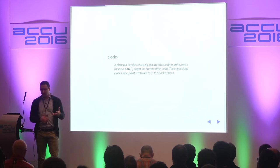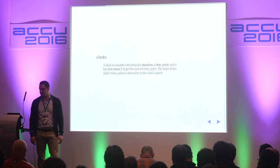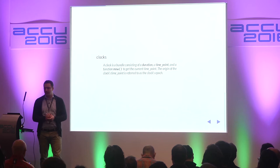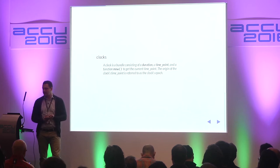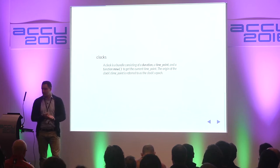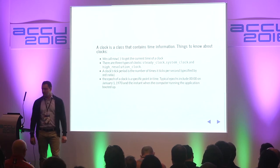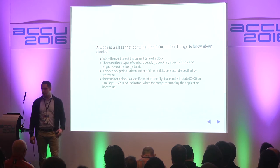To give a definition of each one: a clock is a bundle consisting of a duration, a time point, and a function 'now' that gets us the current time point. The origin of the clock's time point is referred to as the clock's epoch. It's a class that contains time information.